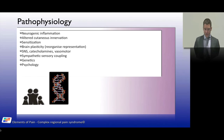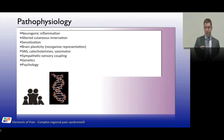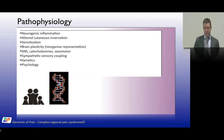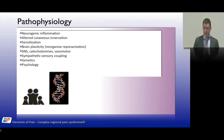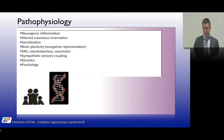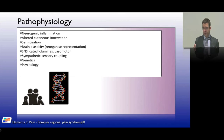Genetics play a role in CRPS. It can occur in families, and associations with a number of HLA antigens have been found in some CRPS patients. Tumor necrosis factor polymorphisms have also been identified, and researchers continue to find new genetic associations.